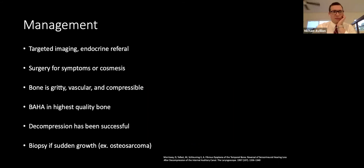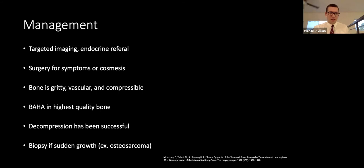The natural history of fibrous dysplasia is variable and unpredictable, so counseling patients is important. The disease is most commonly monostatic; you can screen for endocrinopathy or refer to an endocrinologist. Surgery is for symptoms or cosmesis, noting the bone is gritty, vascular, and compressible. BAHA has been successful; however, failure of osseointegration is more likely in patients with unstable bony changes, so CT should guide implant site selection for the most stable, highest-quality bone.